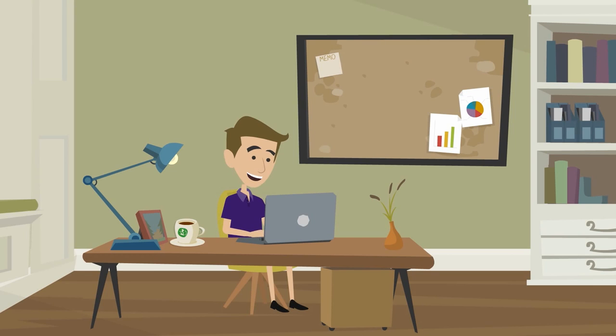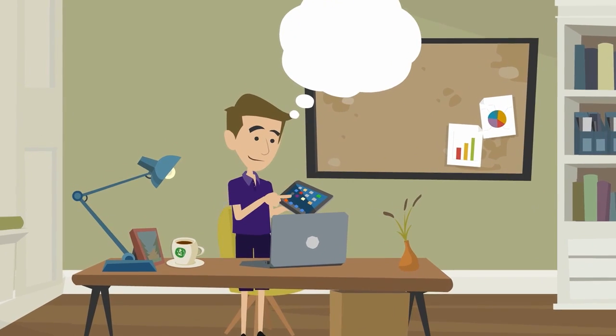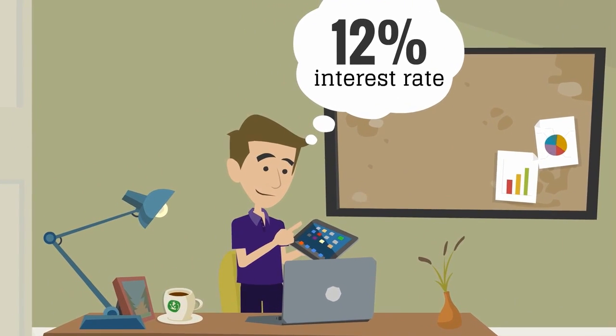At age 19, James decided to invest $2,000 every year for 8 years. He picked investment funds that averaged a 12% interest rate.